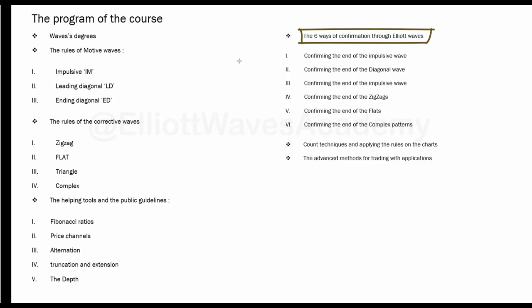Then we'll see the six waves of confirmation through Elliott Waves—confirming the end of impulsive waves, diagonal waves, and corrective waves in general, whether zigzag, flats, or complex patterns. We'll also see the count techniques, applying the rules on the charts, and the advanced methods for training with applications.